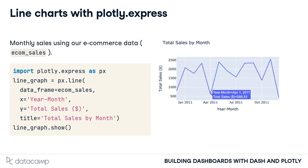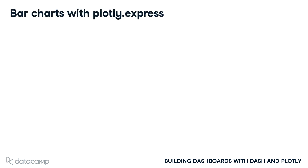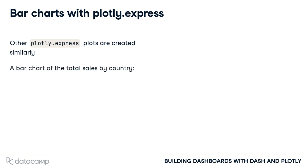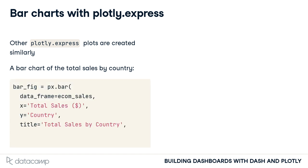We get an instant interactive line chart. Creating different types of graphs with Plotly Express is a similarly easy process. Let's create a bar chart of the total sales by country. The Python code is very similar to the code we wrote to generate the line graph. However, instead of px.line, it is px.bar.